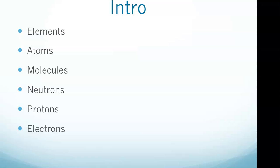As we get started, just some basics: elements are substances that cannot be broken down into other substances. Atoms are the smallest component of an element that retain the properties of that element. Molecules are two or more atoms that are bonded together. Atoms are made up of a nucleus and an orbital cloud that surrounds that nucleus.